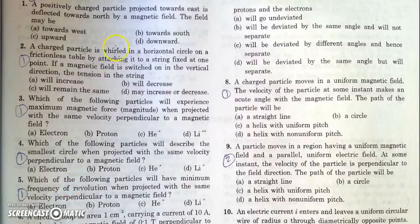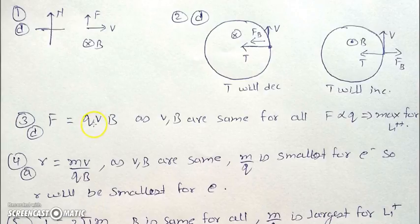In the next question, it is asked which charge will experience maximum magnetic force when projected with the same velocity in a uniform magnetic field. Force is proportional to charge, speed, and magnetic field — F = QVB. Since V and B are the same for all charges, force is proportional to Q. So maximum force is for Li²⁺ because it is the only charge having two positive charges; all other charges have a single charge.